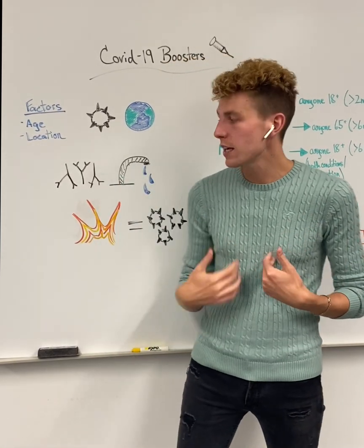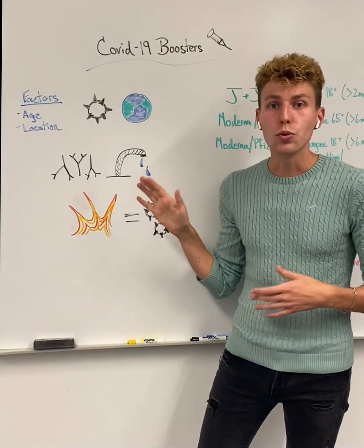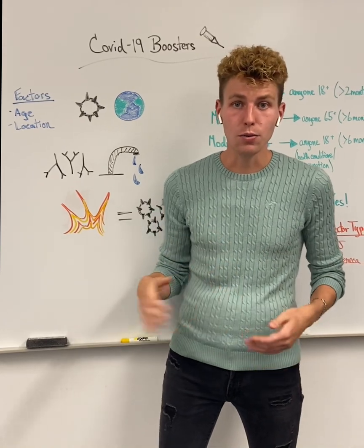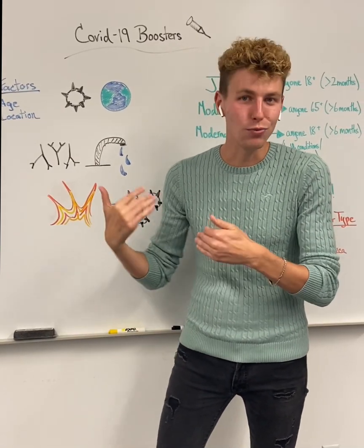Now, you can think of antibodies in your body kind of like a leaky faucet. And slowly, over time, we begin to lose some of those antibodies, or the water begins to drip out of the faucet. Now, this isn't going to run our well dry.